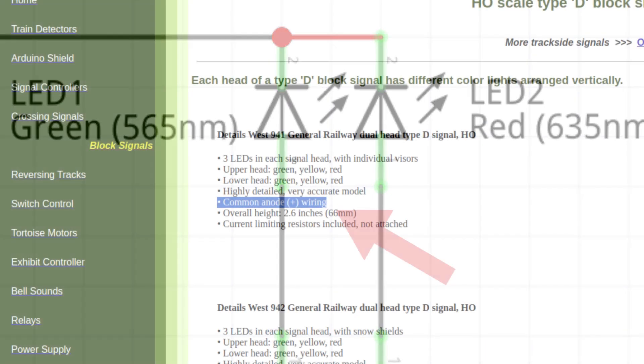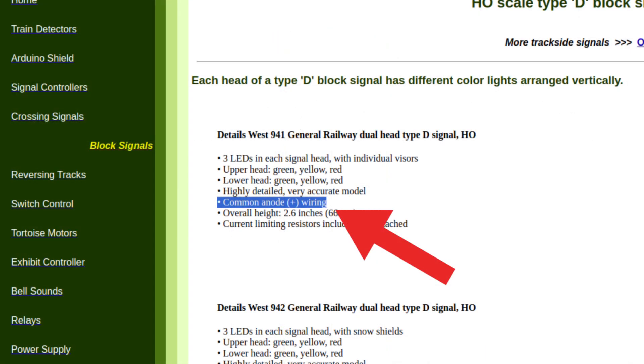The commercial signals you buy will be listed as either common anode or common cathode. Either style will work just fine, but they have to be connected to power differently.